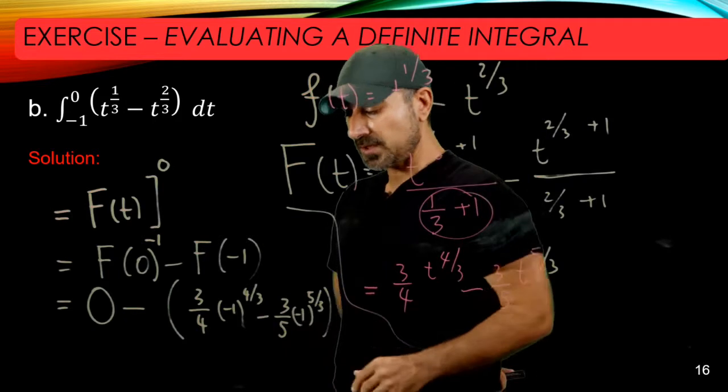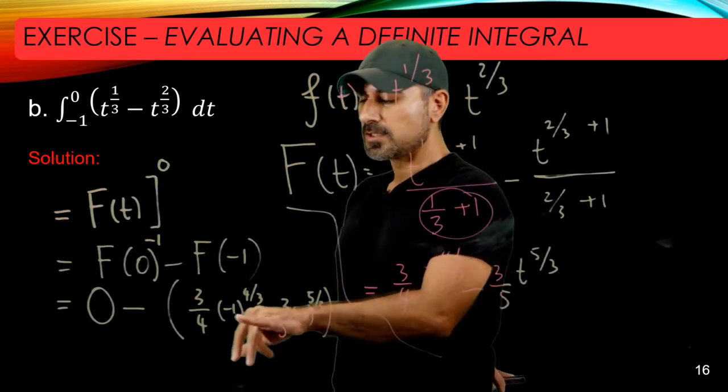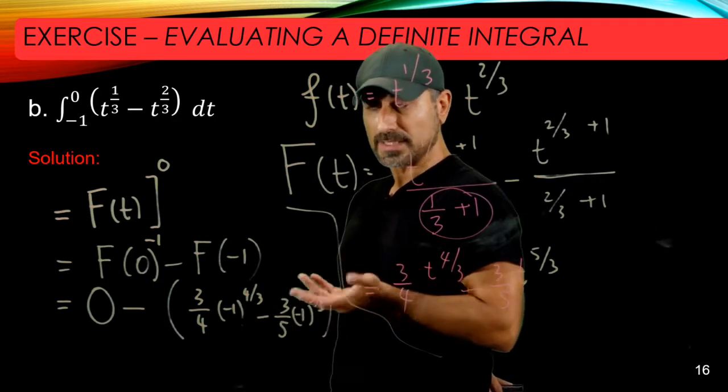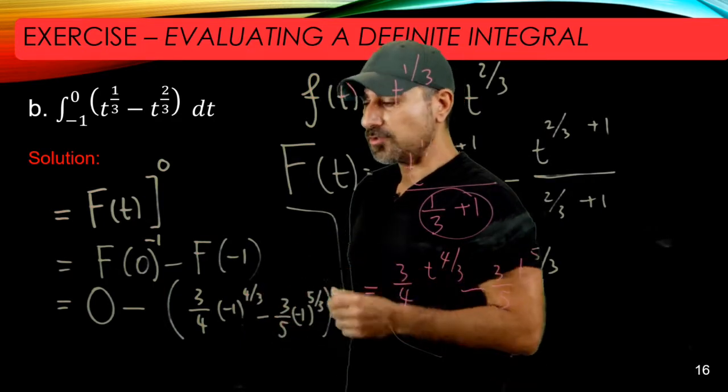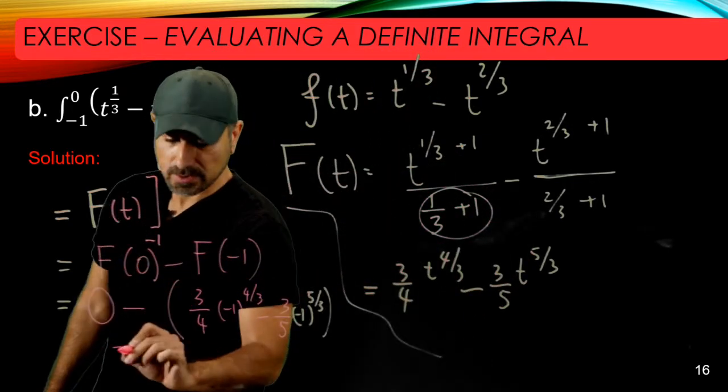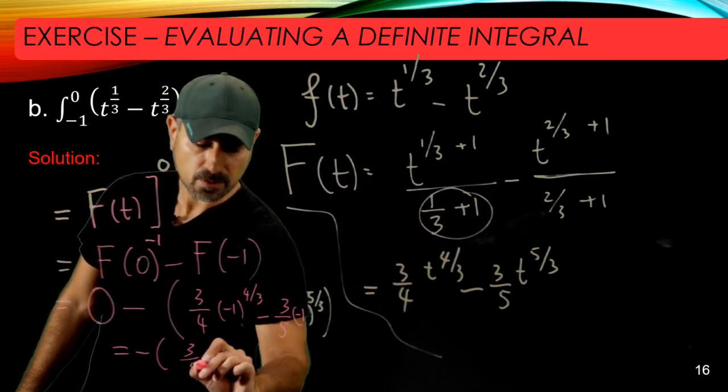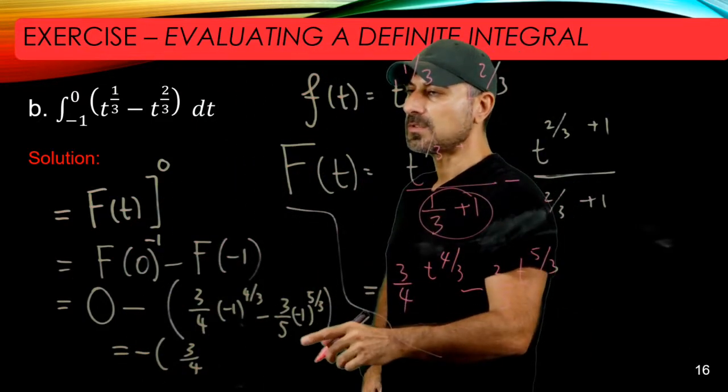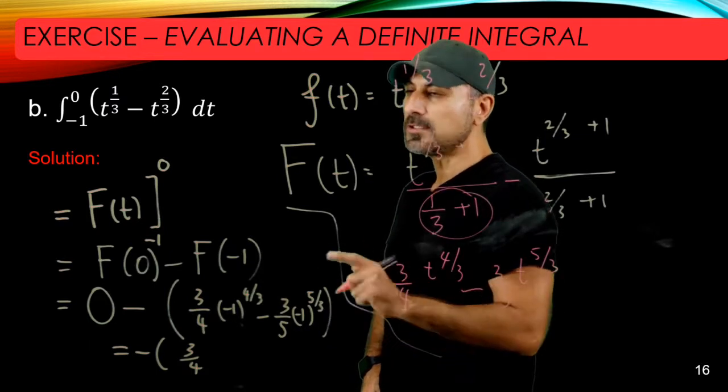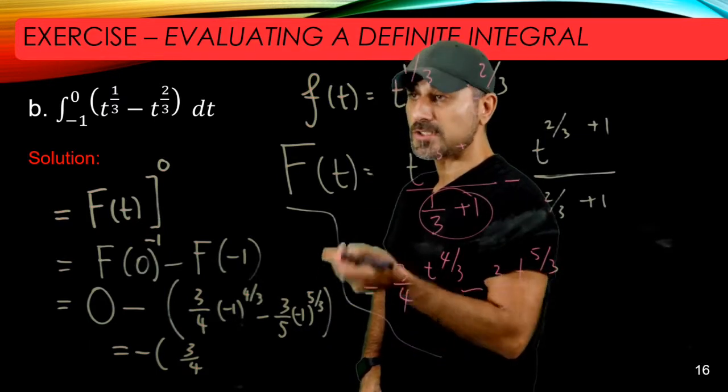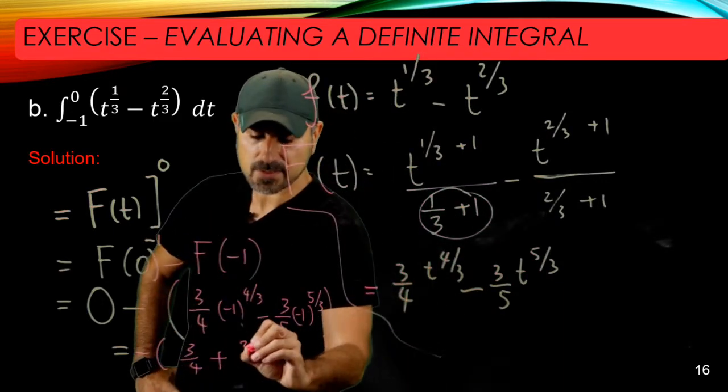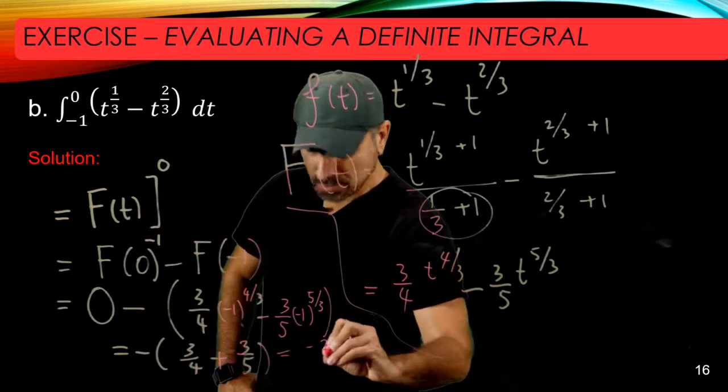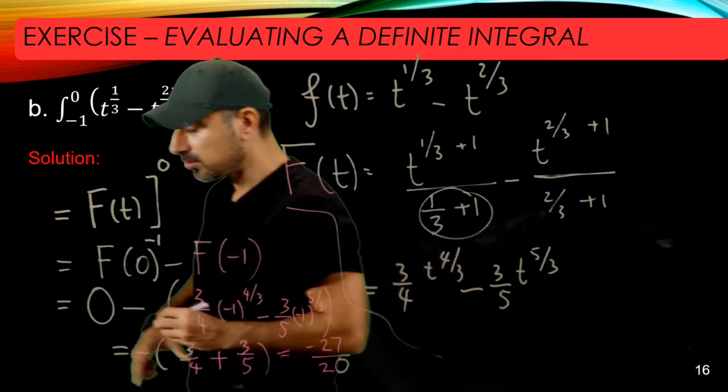At this stage you can use your calculator, but let's do it without a calculator. This essentially means you're taking the fourth power of -1, which is 1, and then you take the cubic root of that, which is also 1, so essentially this is 3/4. For this one, you take the fifth power of -1, which is in fact -1, and you take the cubic root of -1, which is -1, so this becomes plus 3/5. If you add them up, you have -27/20.